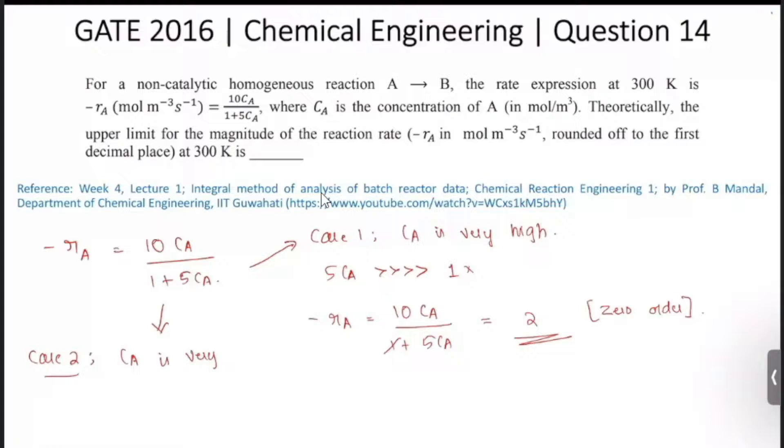And when they say upper limit, it means C_A is maximum, or C_A is very very high, or that means 5 C_A is very very greater than 1. So this is the thing with case 1. So that means you can neglect this 1 term.